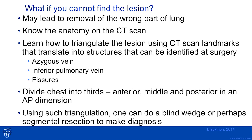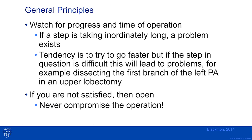Watch for progress throughout the operation. If a step is taking inordinately long, there is a problem. The tendency is to try to go faster, but if a step is difficult, it may lead to problems. For example, when dissecting the first branch of the left pulmonary artery in an upper lobectomy, if that portion takes too long and the lymph node appears too adherent, then converting to open is prudent. If you are not satisfied, open — and never compromise the operation.